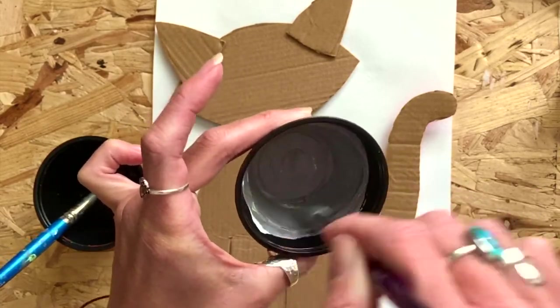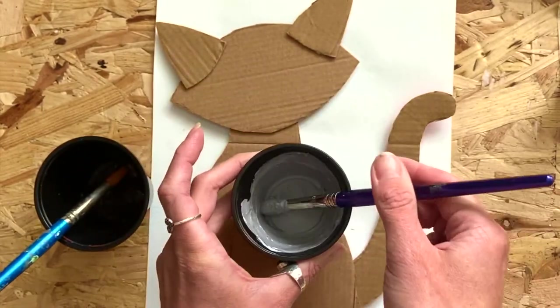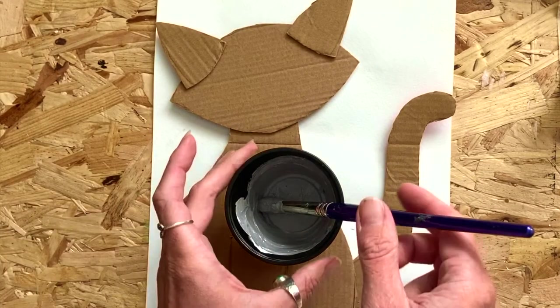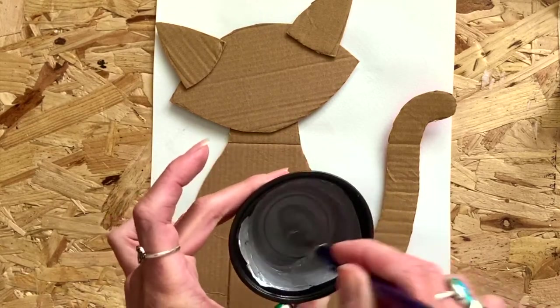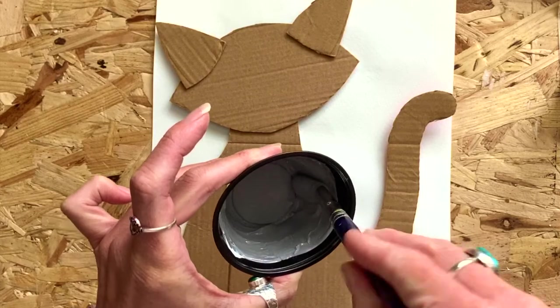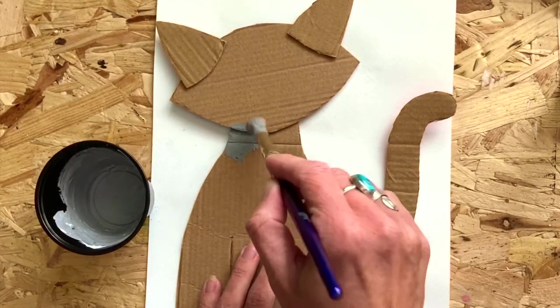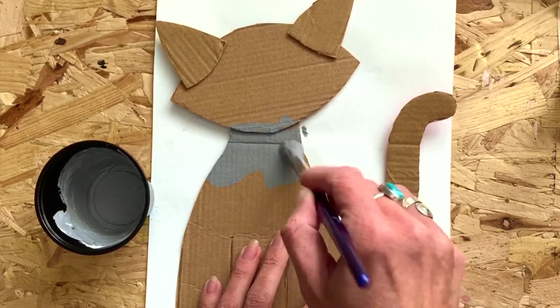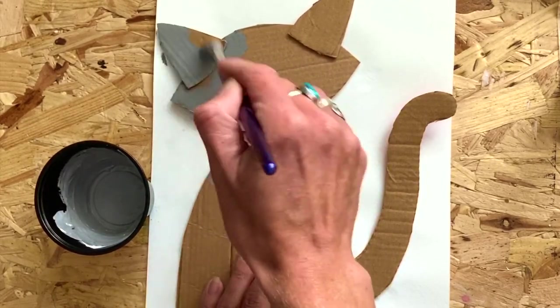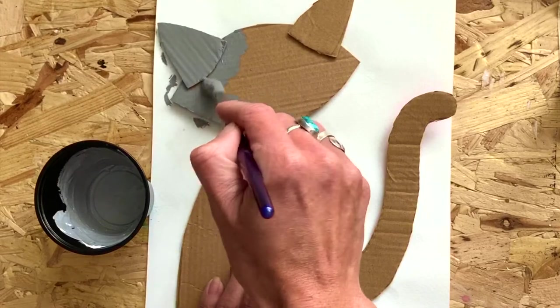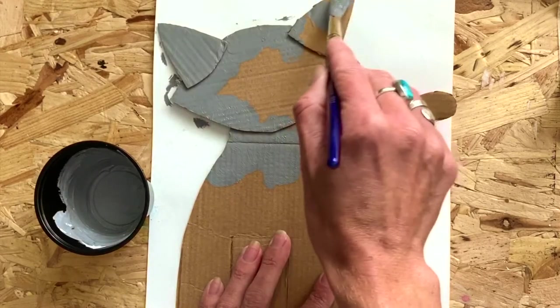Now with a nice thick paintbrush, you're going to start painting your cat. Get a good covering of grey paint onto your paintbrush. And instead of using brush strokes that go up and down, we're going to use a circular motion so that we can get some texture into the cat's fur. Paint his entire body with the light grey paint.